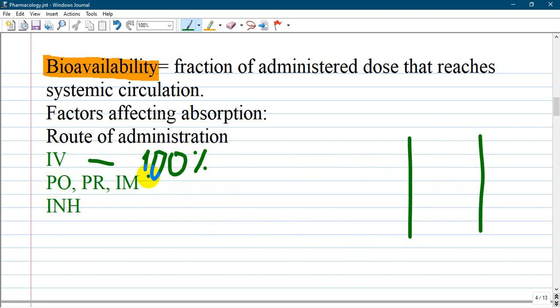Per oral, per rectum, and intramuscular are unpredictable and depend on local blood flow, with decreased bioavailability. Inhalational route is more predictable as it has large surface area.